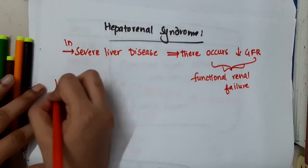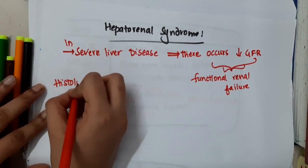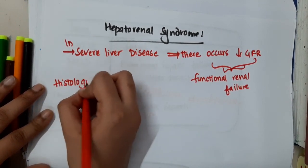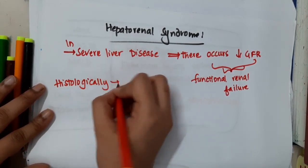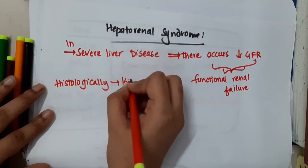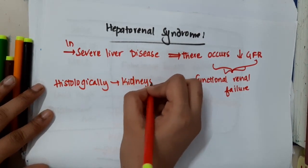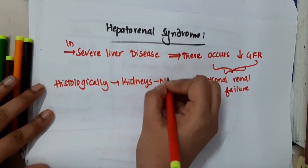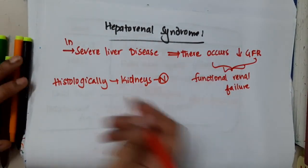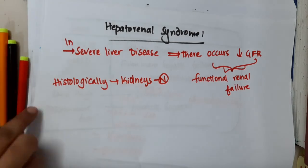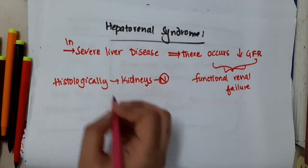But if you see histologically — if you do a renal biopsy — the kidneys will be found to be completely normal. So here, the problem is not in the kidneys but in the liver disease, which leads to decreased GFR.